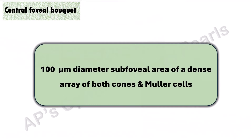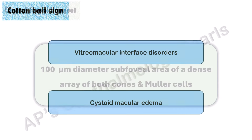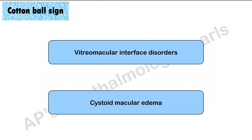The central bokeh is a 100 micron diameter sub-foveal area comprised of a dense array of both cones and Müller cells. The cotton ball sign is described in vitreo-macular interface disorders such as epiretinal membranes and cystoid macular edema.